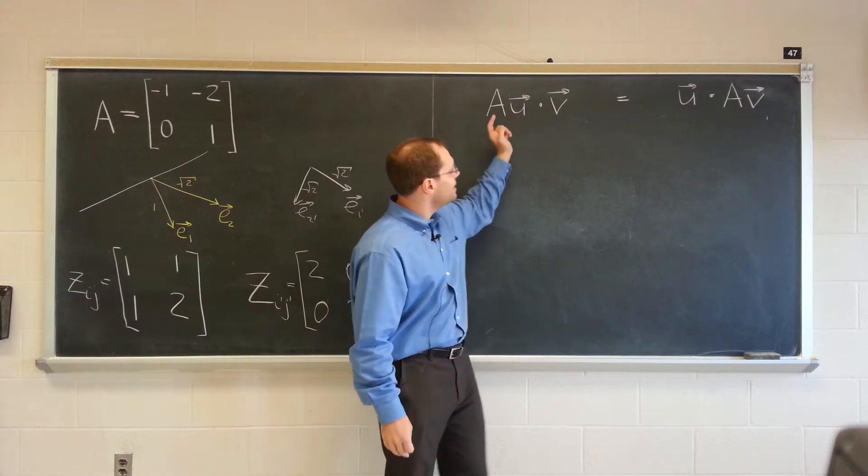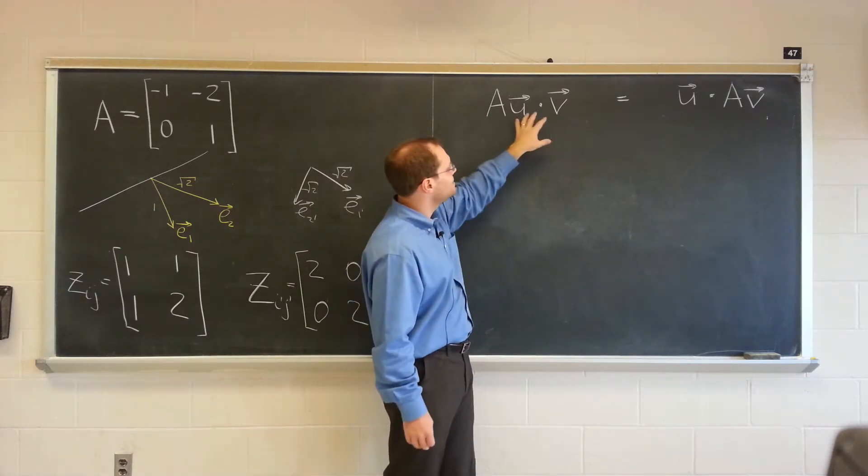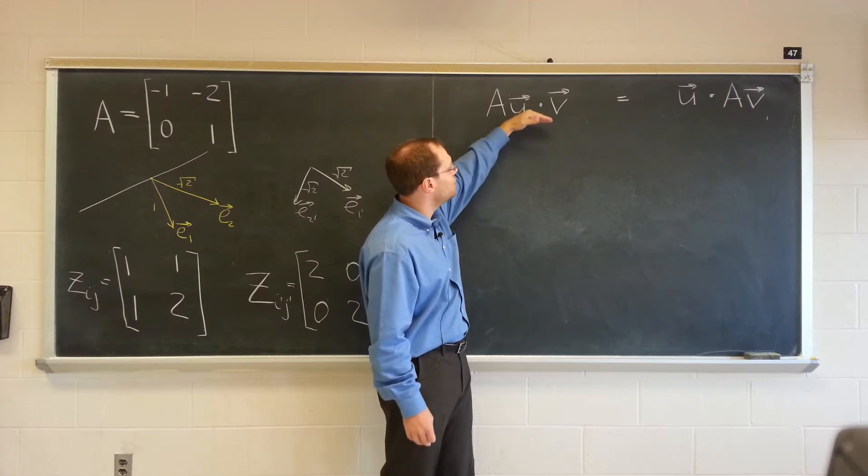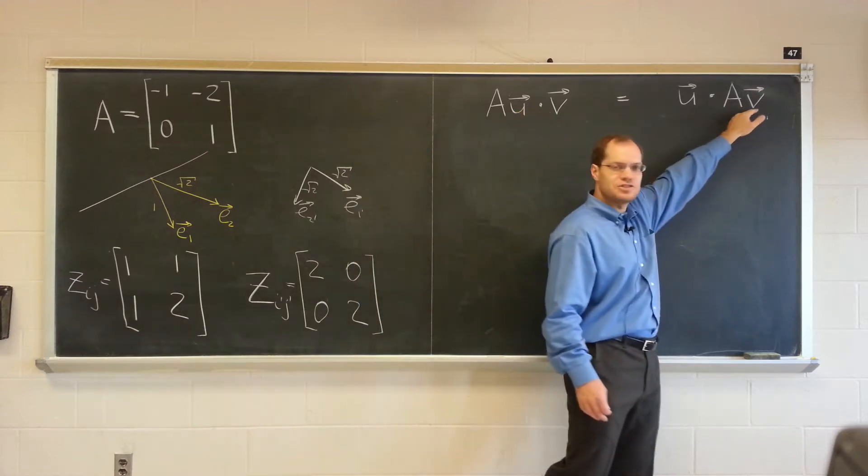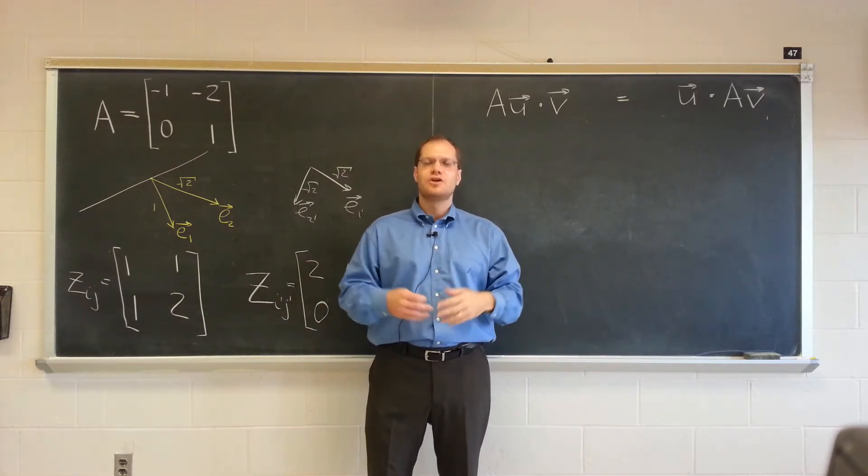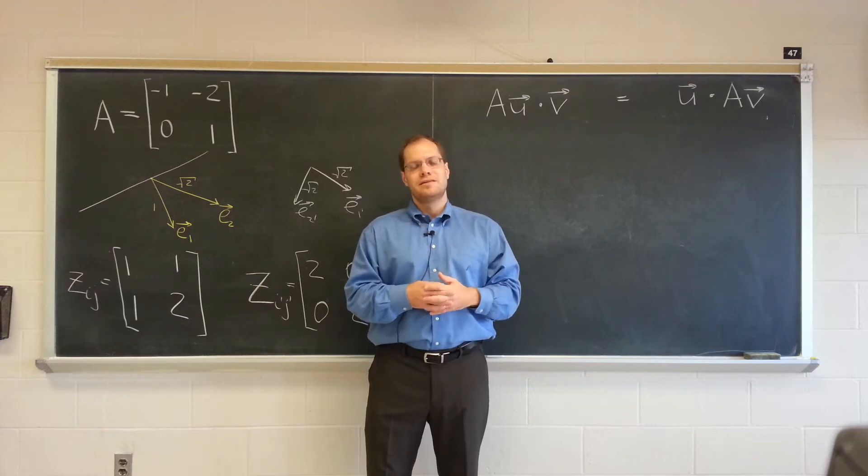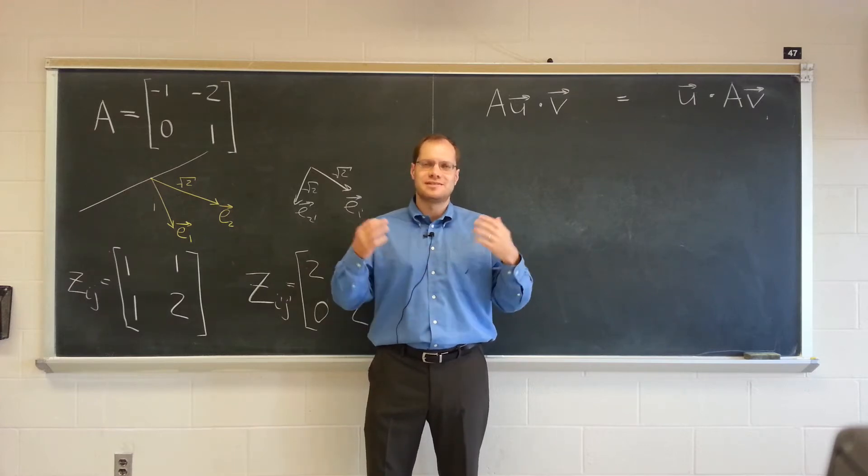For example, it can be applied either to u or to v, and if it doesn't matter, if the result is the same whether it is applied to u or whether it is applied to v, if it doesn't matter which of the two vectors you are applying the linear transformation to, then the transformation is called self-adjoint.